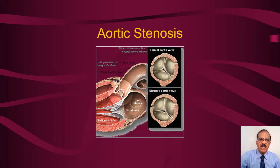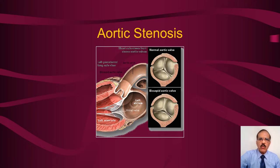This cartoon shows the structure and location of the aortic valve. The left ventricle pumps its blood into the aorta through this valve. Normally, this valve opens during systole to allow blood to go from the left ventricle to the aorta, and during diastole it must close so that blood does not regurgitate back into the left ventricle.